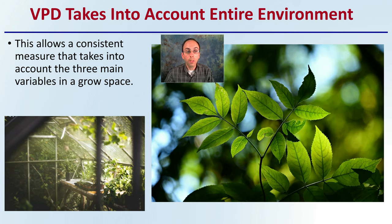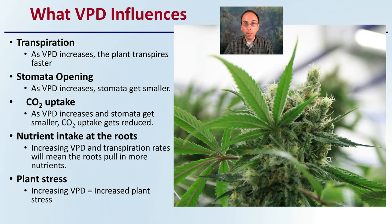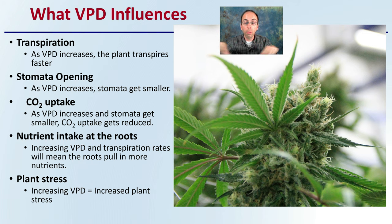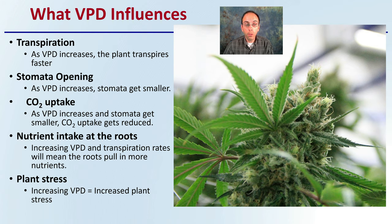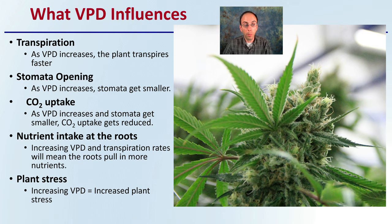This allows a consistent measure that takes into account three main variables within any given grow space. When looking at the influences on VPD: one is transpiration — as VPD increases, the plant is going to transpire at a greater rate, moving water through its material faster. For stomata opening, as VPD increases, the stomata get smaller or start to close up. For carbon dioxide uptake, as VPD increases, the stomata get smaller, which will reduce or restrict CO2 uptake, because those stomata are pores on the inner side of the leaves allowing for gas exchange — when they close, less CO2 enters the plant. At the root level, increasing VPD and transpiration rates will mean the roots pull more nutrients, which can be important. And plant stress: increasing VPD will increase plant stress as well.